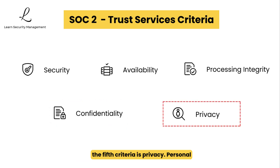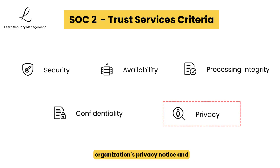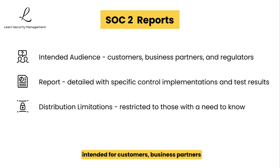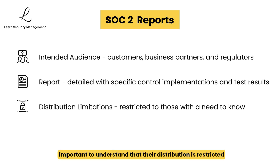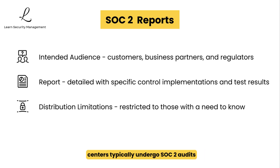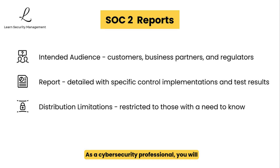The fifth criterion is privacy: personal information is collected, used, retained, and disclosed in accordance with the organization's privacy notice. SOC 2 reports are intended for customers, business partners, and regulators. They are highly detailed with specific control implementations and test results, and their distribution is restricted to those with a need to know. Cloud service providers, SaaS companies, and data centers typically undergo SOC 2 audits to demonstrate their commitment to security and privacy. As a cybersecurity professional, you will frequently evaluate vendors' SOC 2 reports to assess their security posture.